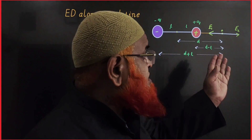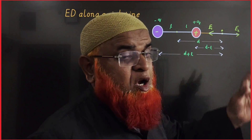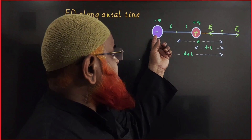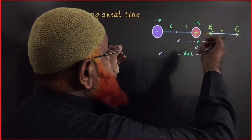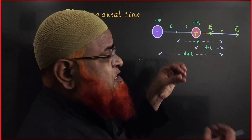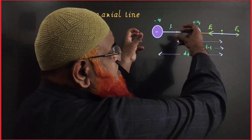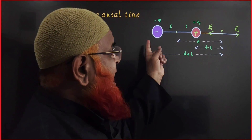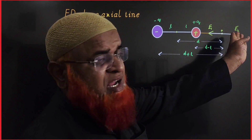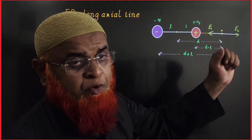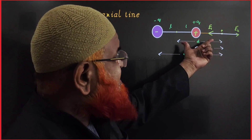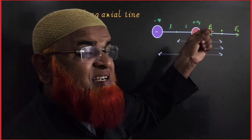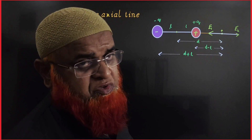Electric field intensity along the axial line of an electric dipole. This is a dipole having negative and positive charge with a finite distance L and L, so 2L is the distance between the two charges. Along the axial line, which passes through the axis of the dipole, at a certain distance D from the middle, we place a test charge, which is always a positive charge.